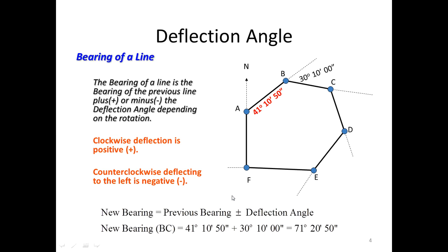The bearing of a line is the bearing of the previous line, plus or minus the deflection angle, depending on the rotation. If we are rotating clockwise, the deflection angle will be positive. If we are going counter-clockwise, it will be negative.